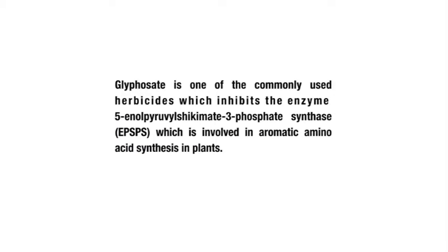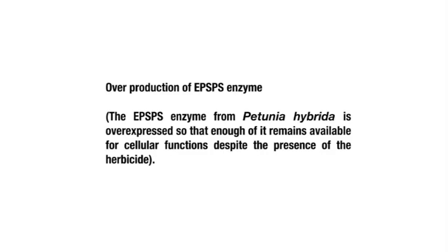Glyphosate is one of the commonly used herbicides, which inhibits the enzyme 5-enolpyruvylshikimate-3-phosphate synthase, called in short EPSPS, which is involved in aromatic amino acid synthesis in plants. Three strategies are usually employed for the production of glyphosate-resistant transgenic plants. The first one is the overproduction of EPSPS enzyme. The EPSPS enzyme from Petunia hybrida is overexpressed so that enough of it remains available for cellular functions despite the presence of the herbicide.